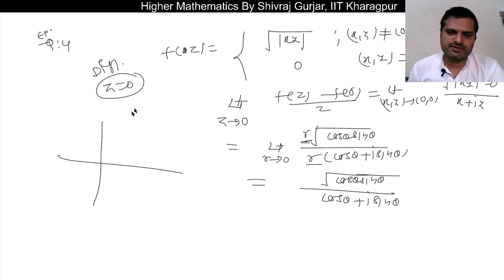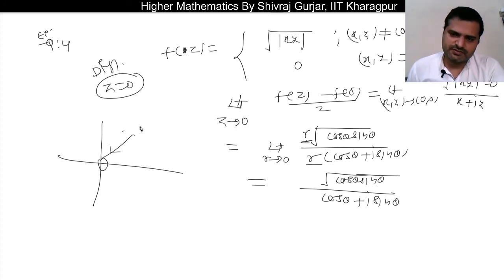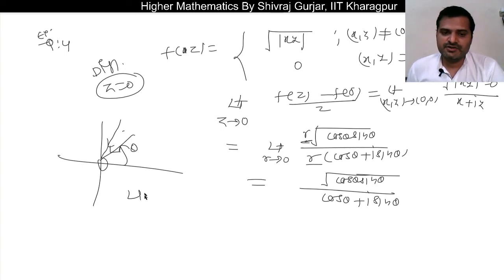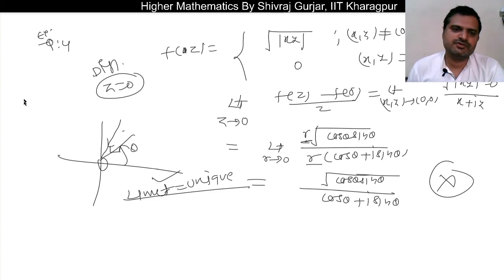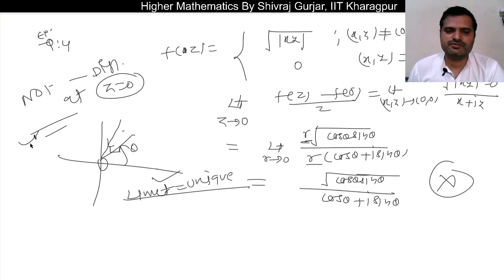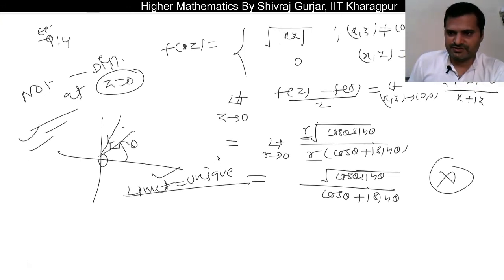After cancellation, we are left with √|cosθ sinθ| / (cosθ + i sinθ), which depends on θ. Since the limit depends on the direction of approach and is not a unique value, the limit does not exist. Therefore f(z) is not differentiable at z = 0.